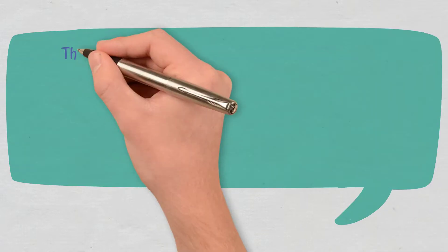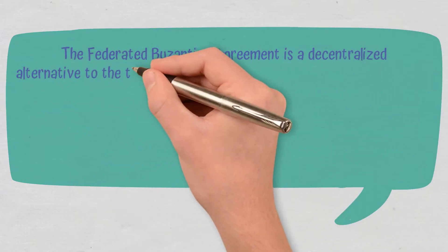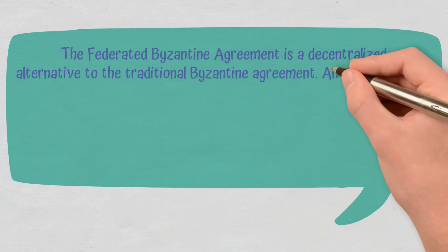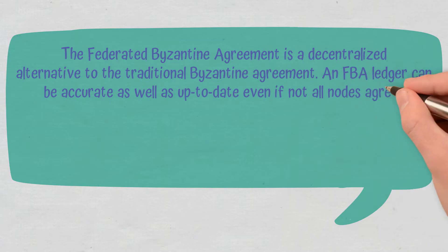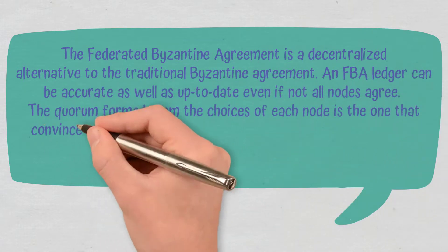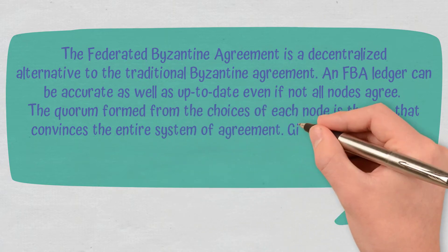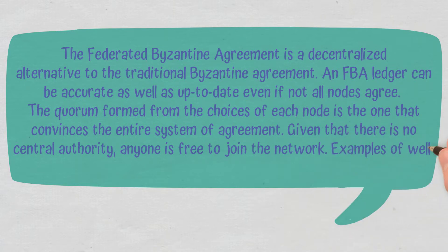Conclusions. To sum up, the Federated Byzantine Agreement is a decentralized alternative to the traditional Byzantine agreement. An FBA ledger can be accurate as well as up-to-date even if not all nodes agree. The quorum formed from the choices of each node is the one that convinces the entire system of agreement. Given that there is no central authority, anyone is free to join the network.